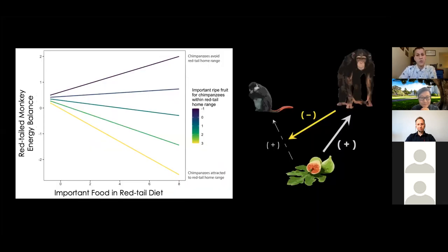We found that when preferred chimp foods were scarce in the red-tail home ranges, they avoided the area and red-tail energy balance followed the abundance of foods in their diets, as seen in the top purple line. As chimp foods became more abundant, competition increased and red-tail energy balance decreased, seen in the bottom yellow line. As expected, the relationship between food availability and energy balance was moderated by competition from chimpanzees, as we measured geospatially through their food.